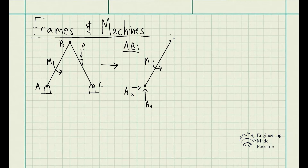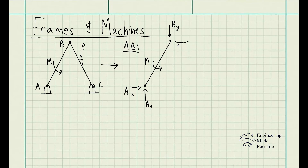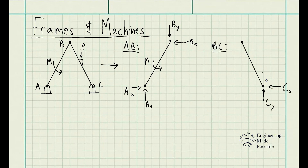Since the structure is in static equilibrium, each member is in static equilibrium. That means at pin B we have equal and opposite reactions: BY equal and opposite to AY, and BX equal and opposite to AX — the forces must cancel out for static equilibrium. Looking at member BC, we have reactionary forces CY and CX, and at pin B we apply the same equal-and-opposite principle.